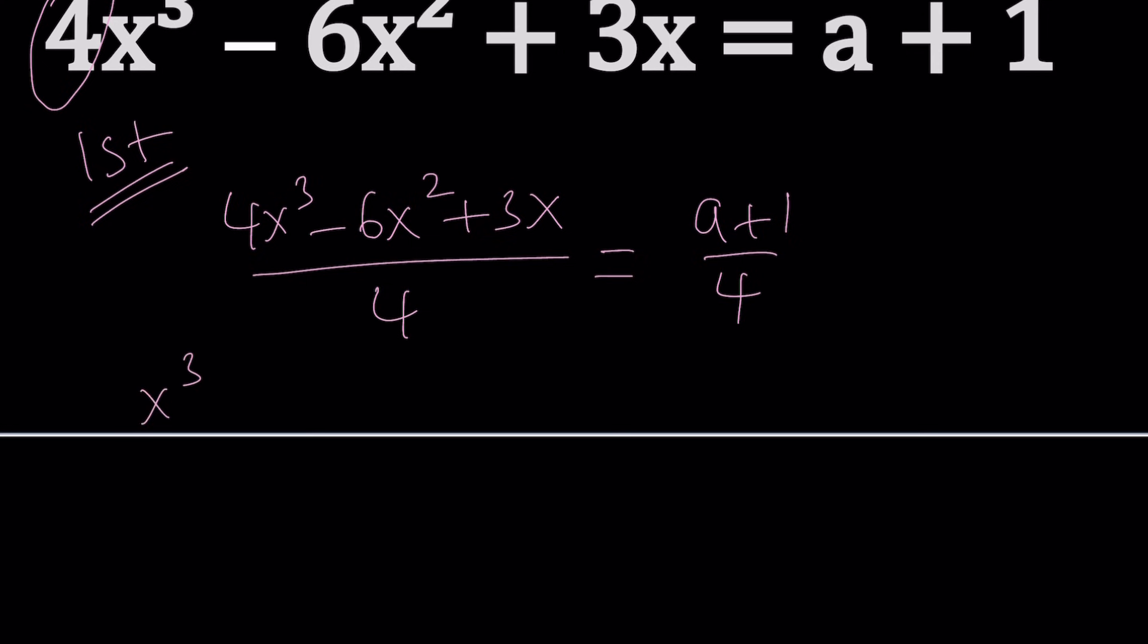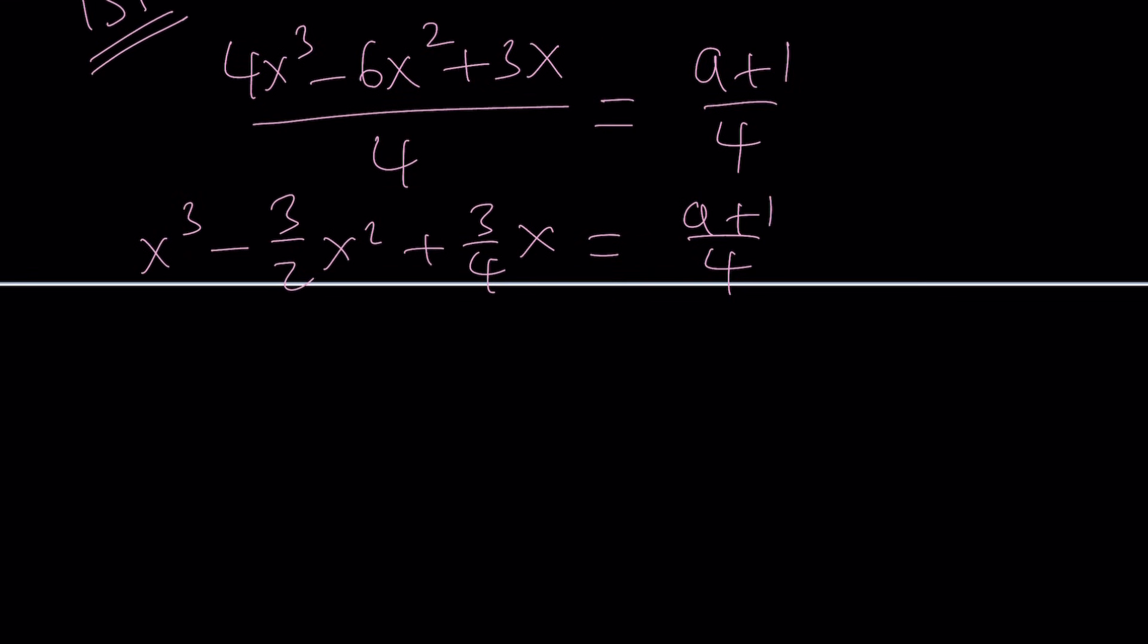And then, from here, we're going to get x³. And the coefficient of x² is going to be -3/2. And coefficient of x will be 3/4. And I'd like to keep the constant on the right-hand side, which is (a+1)/4. Because in the cubic formula, it's better that way. Of course, you can have other constants because we're going to make a transformation.